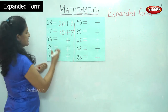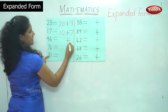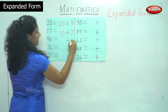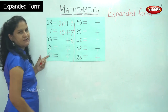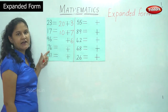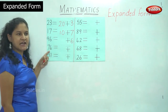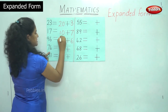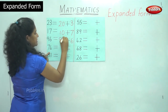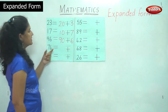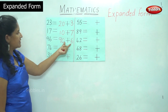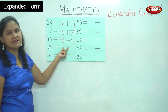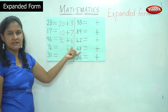The next number is number 96. In the ones place I have number 6 and in the tens place I have 9 tens. 9 tens is nothing but the number 90. So 96 is equal to 90 plus 6.